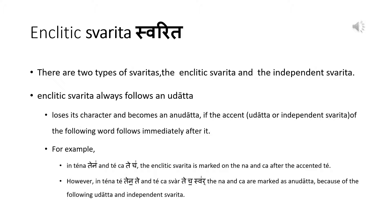There are two types of svaritas: the enclitic svarita and the independent svarita. An udātta is normally always followed by a svarita, called the enclitic svarita. The enclitic svarita is merely a shadow following an udātta.